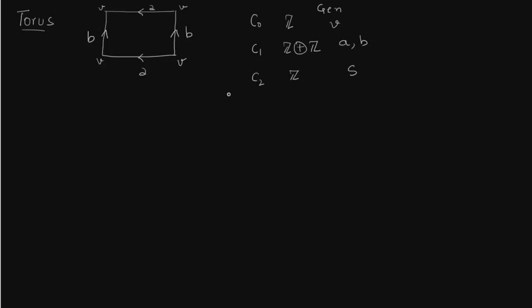So let us write down this chain. We have zero, we write C_2 first which is just Z, then C_1 which is Z direct sum with Z, and then C_0 again Z, and then zero.